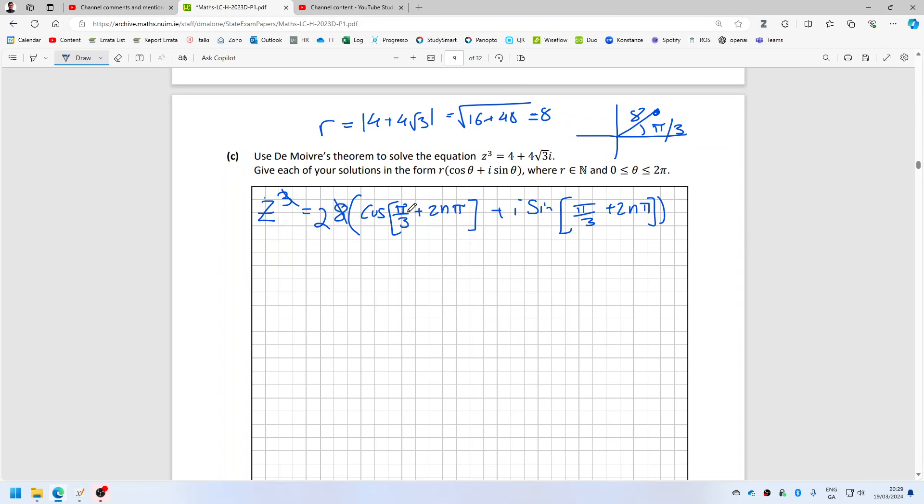And De Moivre's says you divide by 3, so that becomes pi over 9 and 2n pi over 3. We just have to put in n equals 0, n equals 1, and n equals 2, and then we have the three answers.